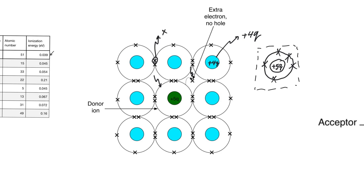In general, we have electrons being created leaving behind holes, and electrons being created without holes. So we know that in this type of silicon, n is going to be greater than p — the concentration of electrons is going to be greater than the concentration of holes. We call this type of silicon n-type silicon: silicon whose properties are dominated by free electrons rather than holes, because it has much more electrons than holes.